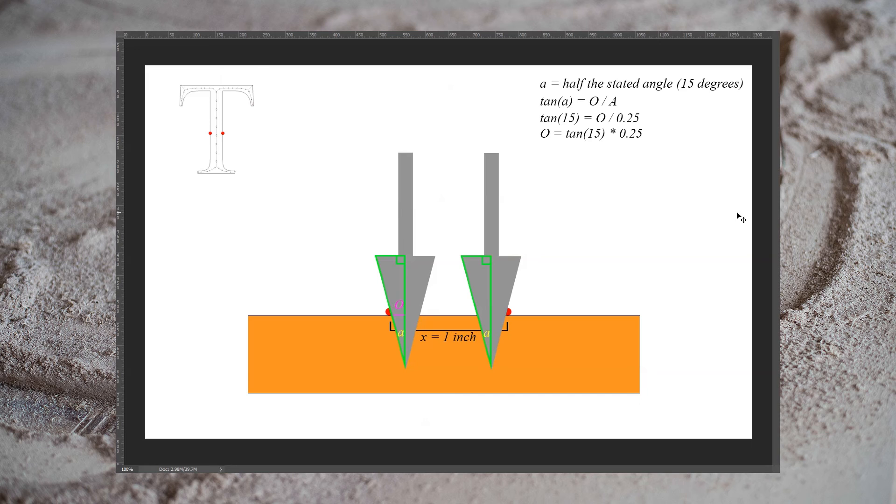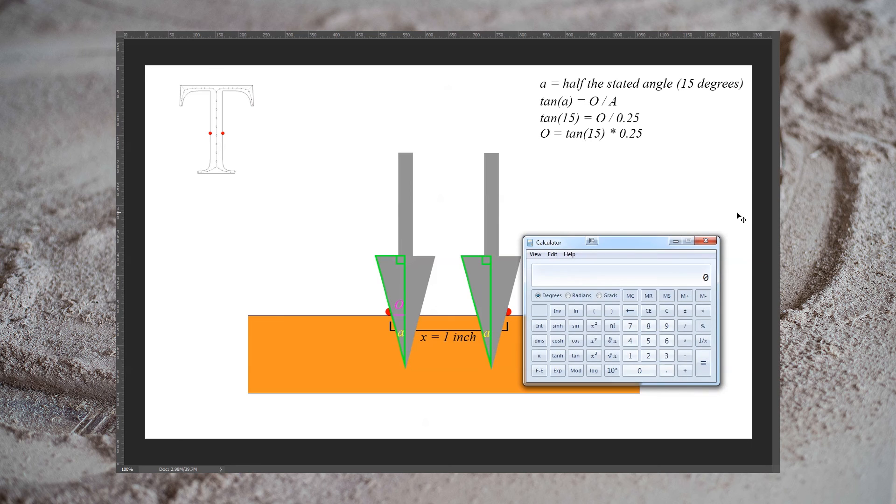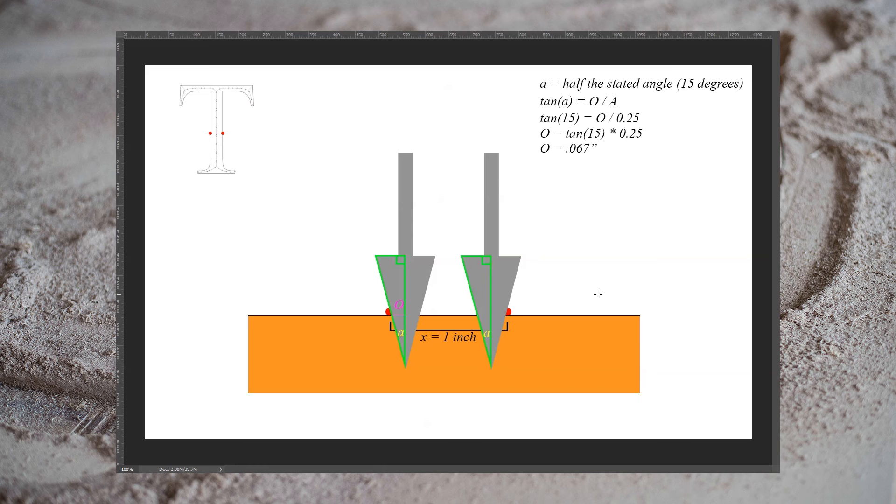This means the distance from the top of the stock to where the tip of our end mill is will be 1 quarter of an inch. In this case, we want to solve for our opposite side, simply by multiplying both sides by 0.25, resulting in our opposite side equaling the tangent of 15 degrees times 0.25. Once again, relying on calculator. Tangent 15 times 0.25 equals 0.067 inches. This means if we move the V-bit 0.067 inches away from our actual profile line and cut to a depth of 0.25 inches, the edge of it should cut right on our line.